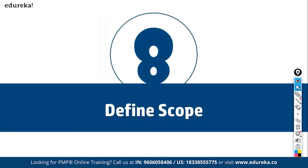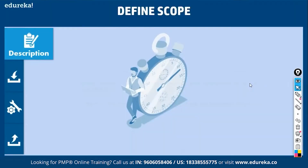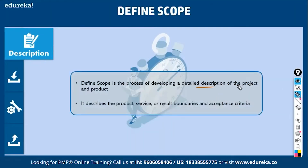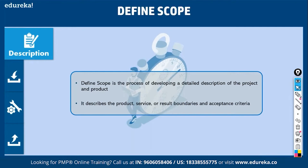Now we have gathered requirements, so the next step is to define scope — a very important document. In define scope, you come with a detailed description of the project and product. You describe what the product features are — the product, service, or result boundaries and acceptance criteria. Acceptance criteria specifies the set of conditions you must prove to get the scope accepted by the customer. If something doesn't get into scope, it won't get into the project, so you must not omit anything.